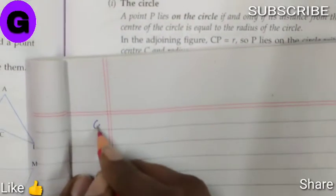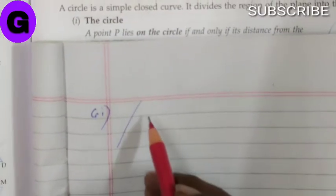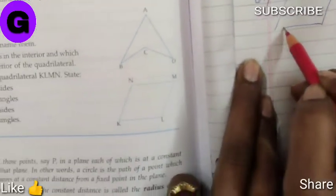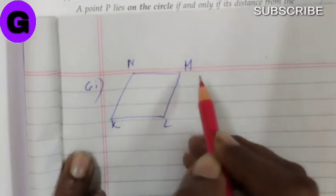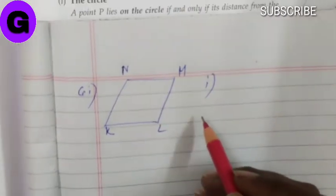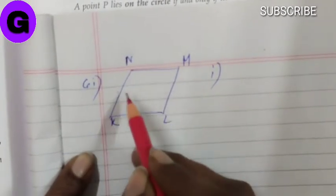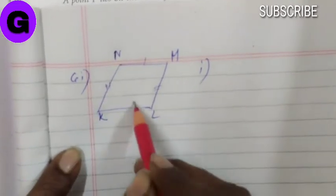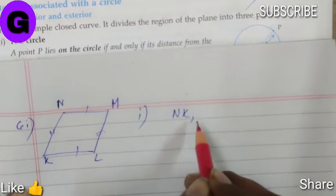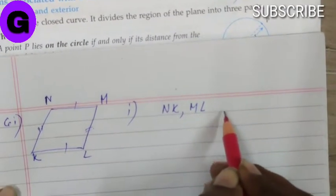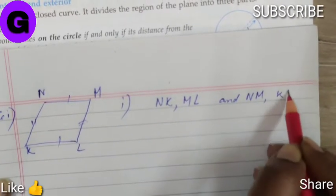Now sum number 6, part 1. They have given a rough diagram of a quadrilateral N, K, L, M. We have to state two pairs of opposite sides. So opposite sides means this, this, this and this. Two pairs: N, K, M, L and N, M, K, L.